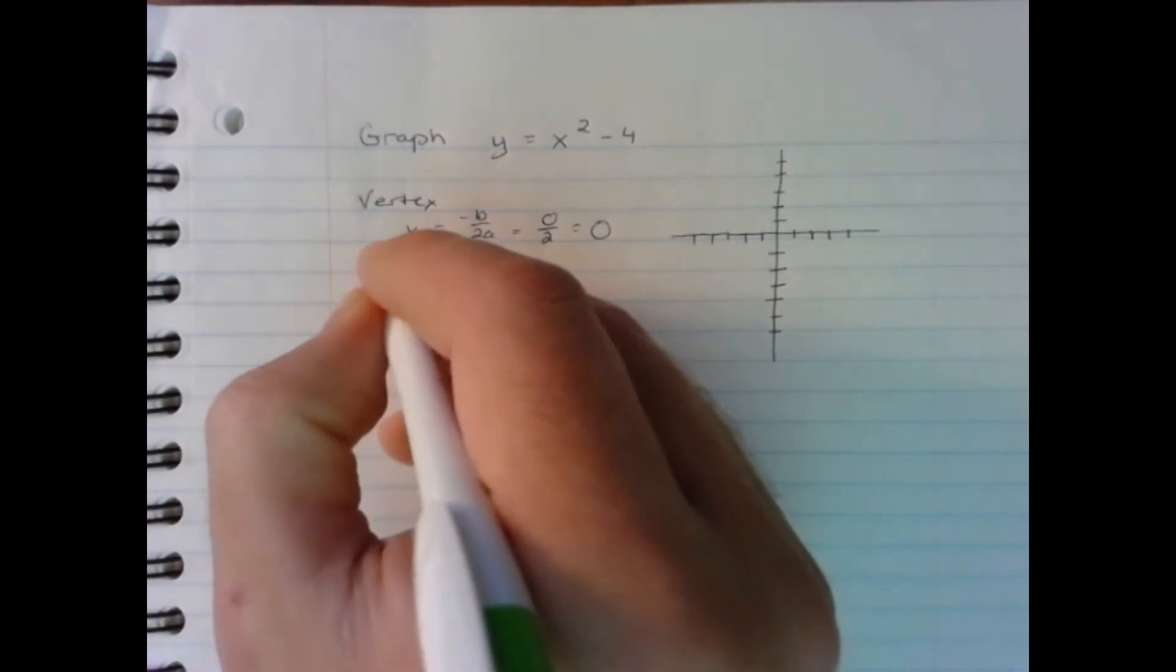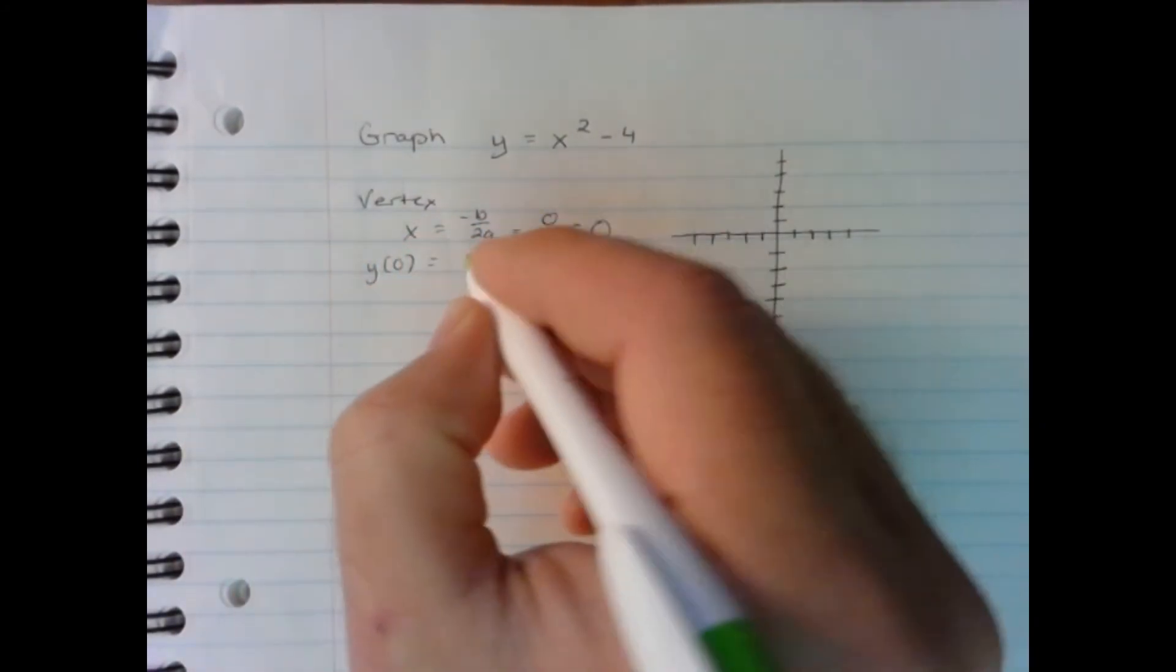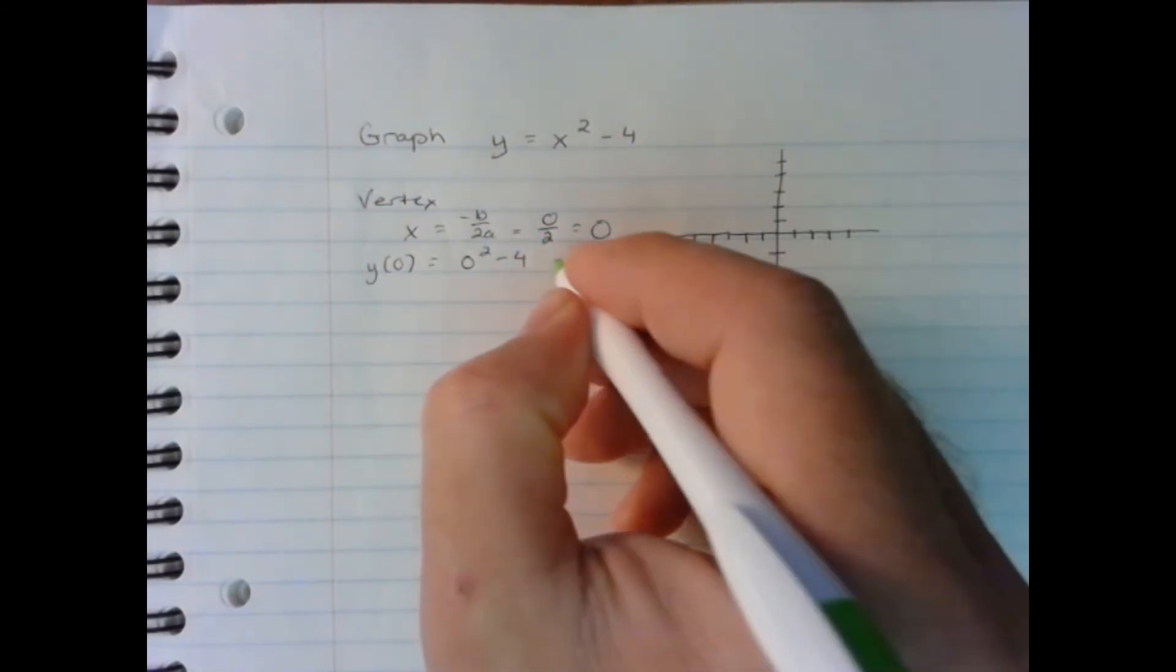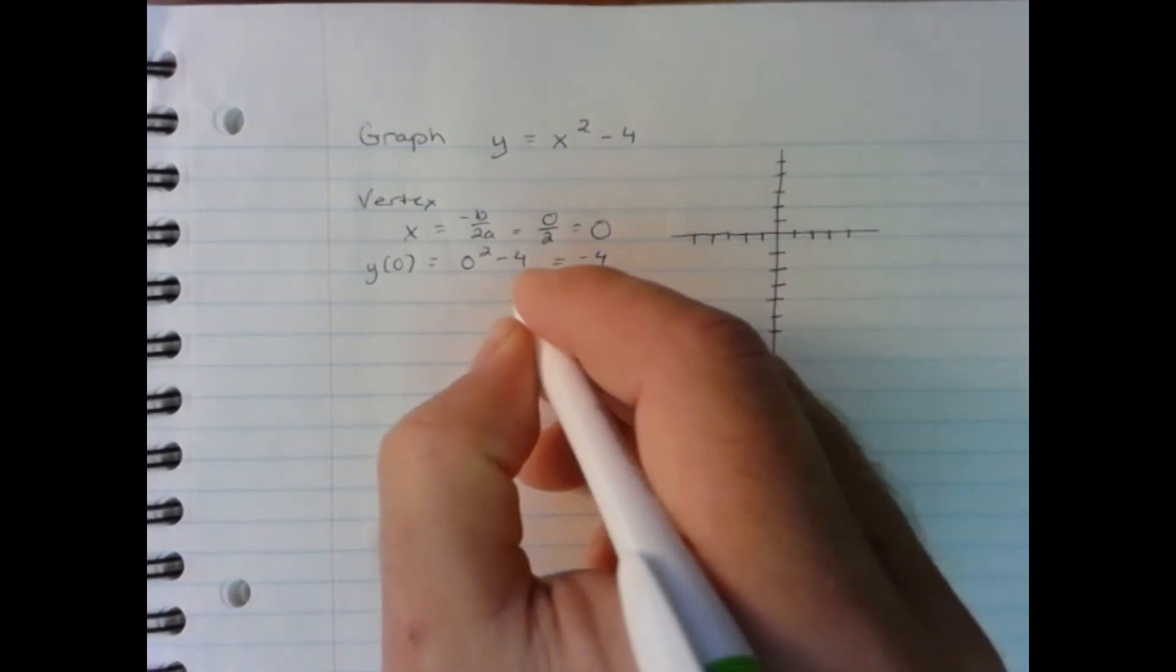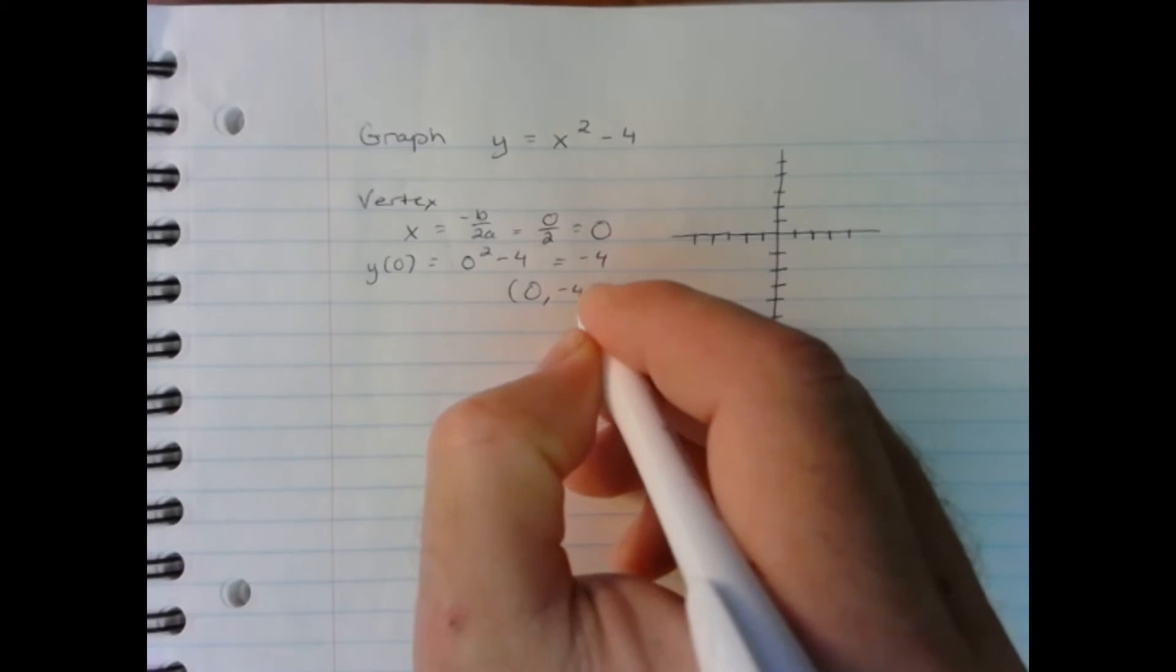To find the y-coordinate, we'll put 0 into the function. And that gives us negative 4. So we know we have a vertex of 0, negative 4.